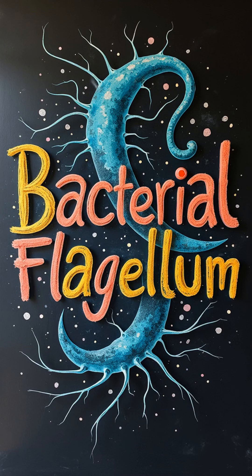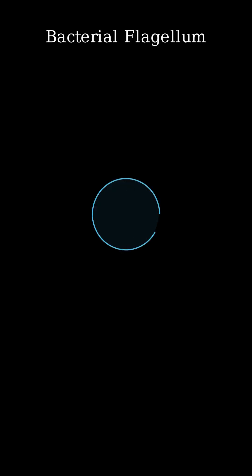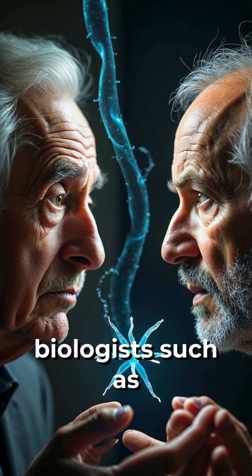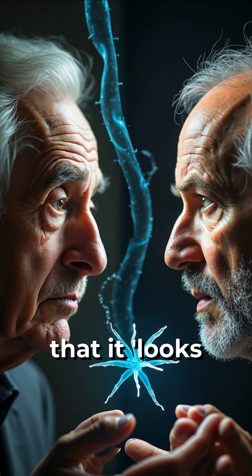One key example supporting ID is the bacterial flagellum, a rotary motor that some have referred to as an outboard motor for cells. The flagellum's highly organized system consists of a rotor, stator, and drive shaft, which all function together in a precise and highly regulated manner. Even evolutionist biologists such as Richard Dawkins admit that it looks designed.